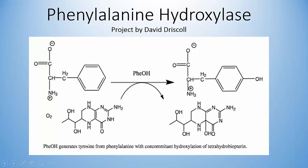The protein discussed in this video is phenylalanine hydroxylase. The enzyme catalyzes the reaction that converts phenylalanine to tyrosine using oxygen and a cofactor called tetrahydrobiopterin, or BH4 for short. This reaction takes place mainly in liver cells in the cytosol, though there is evidence it can also take place in the kidneys.